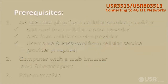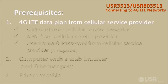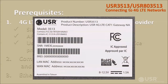First there are a few requirements before you can get connected. You'll need to contact a cellular service provider for a subscription to a data plan on a 4G LTE cellular network. When requesting a data plan for the Verizon network you'll need to provide the IMEI number of the gateway.